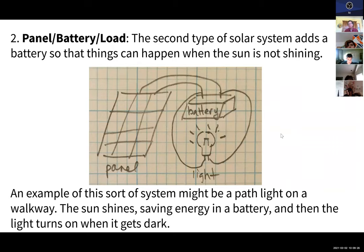The second type of system adds a battery so things can happen when the sun isn't shining. My diagram is not the best, but I have the solar panel connected to the battery and then the light bulb connected to the battery. An example of this kind of system would be path lights. Many people have little solar path lights in their garden or walkway. They charge up during the day, and then at night the battery runs the light until it goes out.